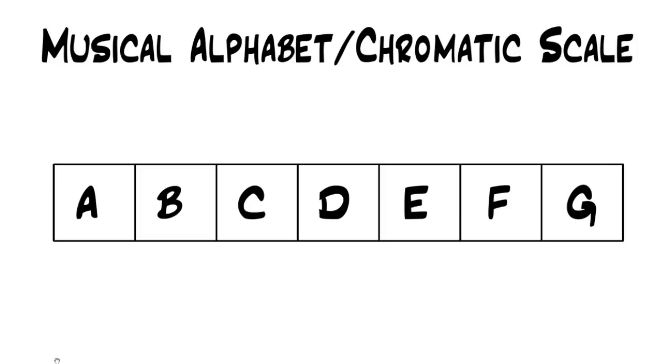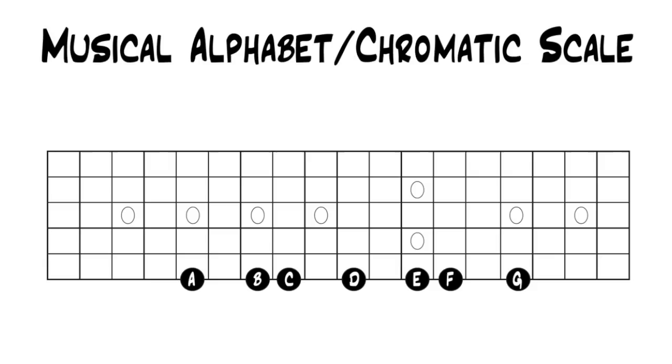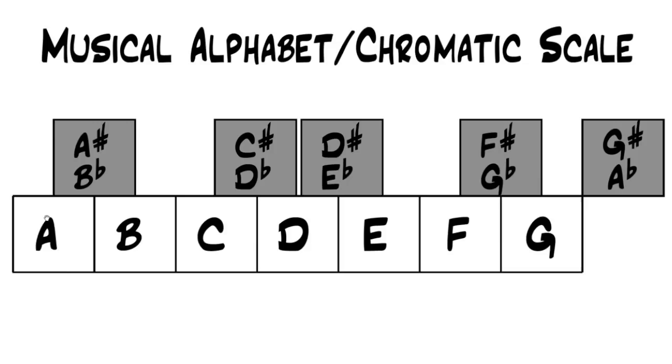So in this lesson, we're going to talk about the musical alphabet, which is all the notes in music. So the musical alphabet goes from A to G. Just like the regular alphabet, it's in the same order. It's just shorter than the regular alphabet because after G, you would start back over at A. So here's the musical alphabet on one string of the guitar. And I'm sure you noticed that between A and B, C and D, D and E, and F and G, that there's notes missing.